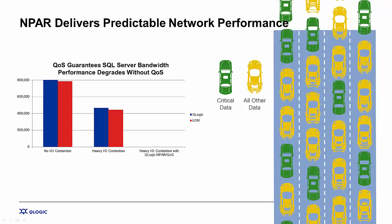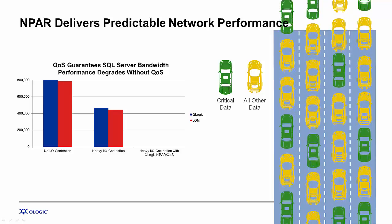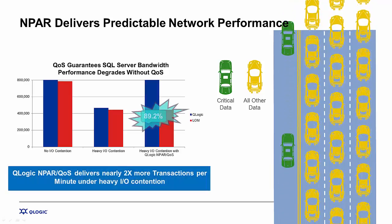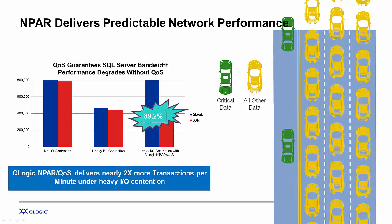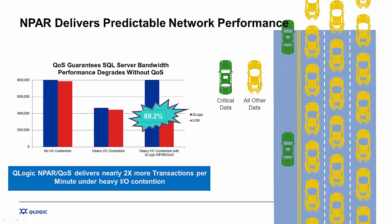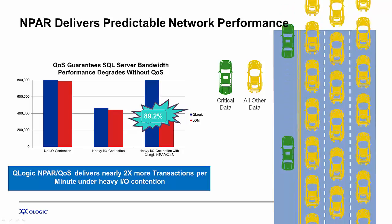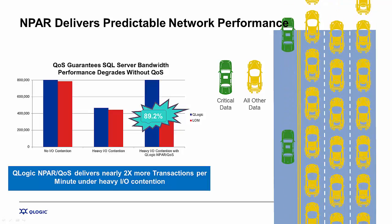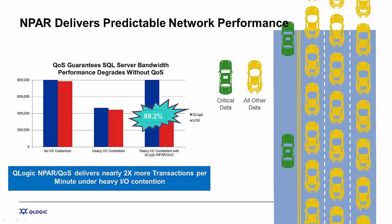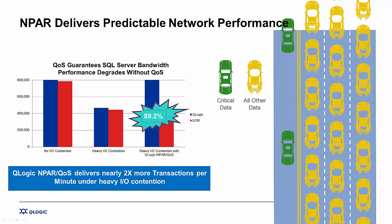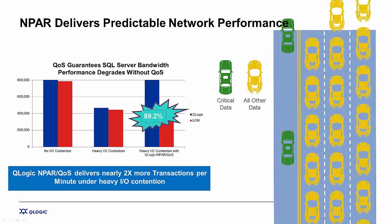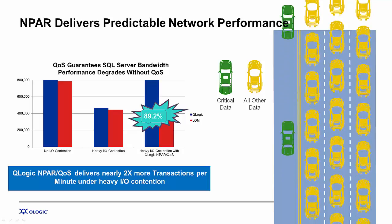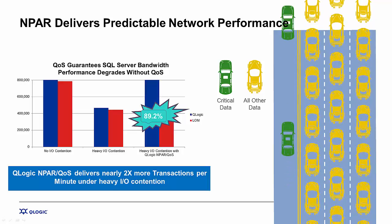The IT phone starts to ring because those critical applications have in fact slowed down. By implementing network partitioning or N-PAR, dedicated lanes can be carved out for critical applications, allowing them to run at full line rate all the time. This capability is built into all the HPE and QLogic flexible network adapters and is a simple configuration change by the IT administrator. Enabling N-PAR on critical applications allows them to run up to two times faster when there's heavy I-O contention.